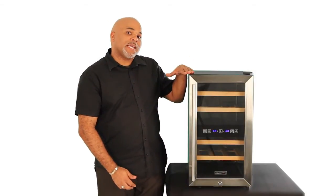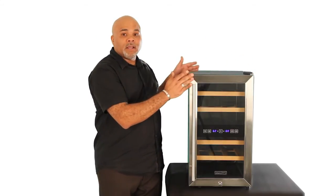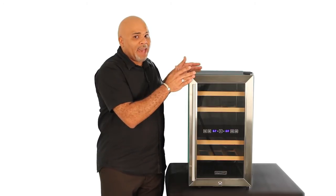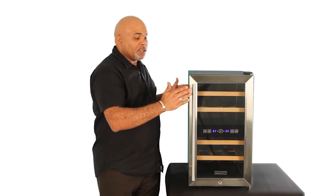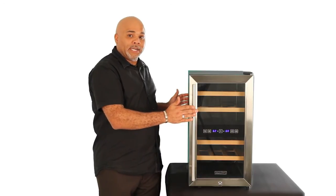This wine cooler measures 25 1/3 inches high, only 14 inches wide, and from the back to the front of the door, it's 19 1/2 inches. When you measure to the front of the handle, the depth is 22 1/4 inches.